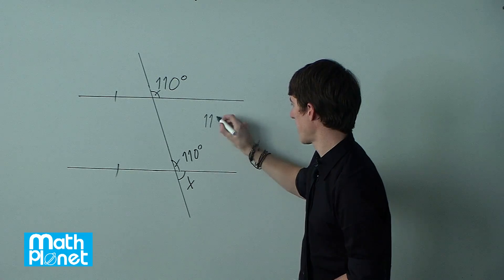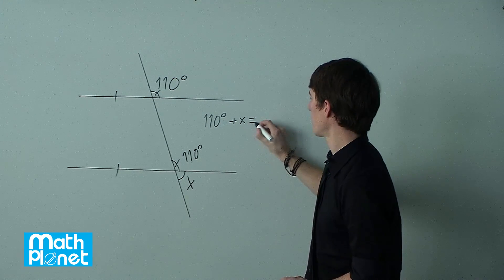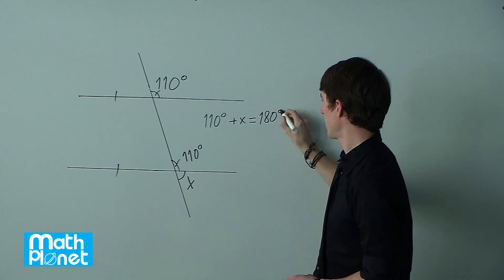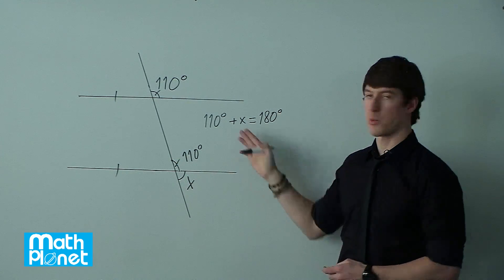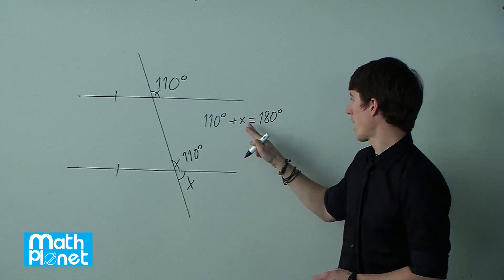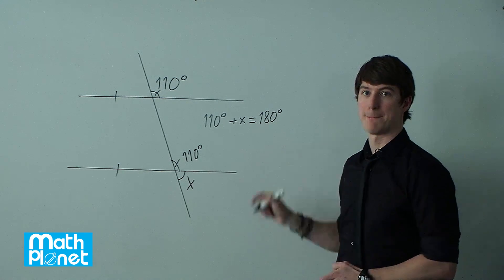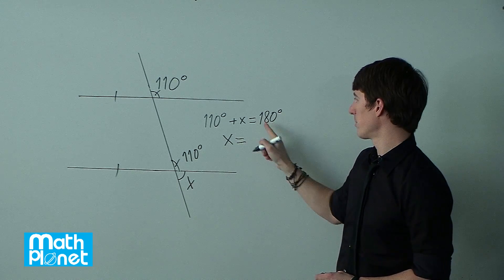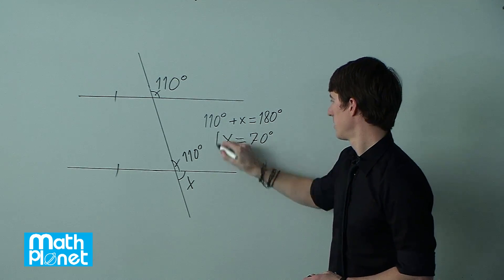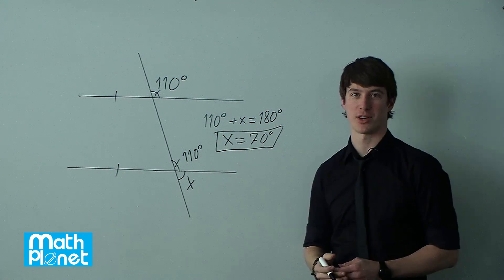So 110 degrees plus x equals 180 degrees, because the angle of a straight line is 180 degrees. So then we can just solve for x from here. So x is just going to be 180 minus 110. So x equals 180 minus 110 gives us x equals 70 degrees.